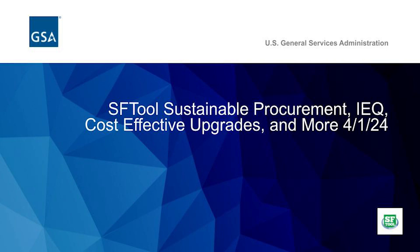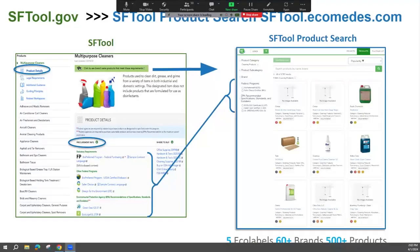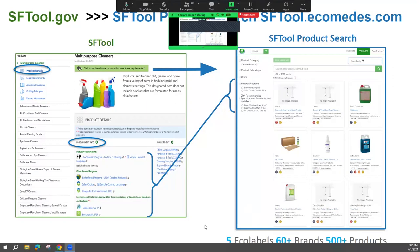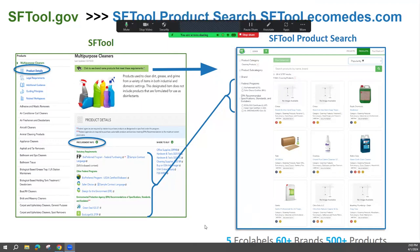We're going to continue with our tour of SF Tool product search. What we've built for you is a link that takes you from the rules to the actual products. You get there by clicking on the green binoculars on any of the product pages.